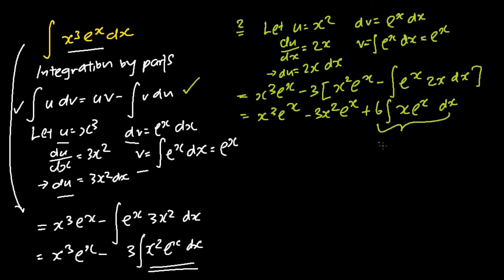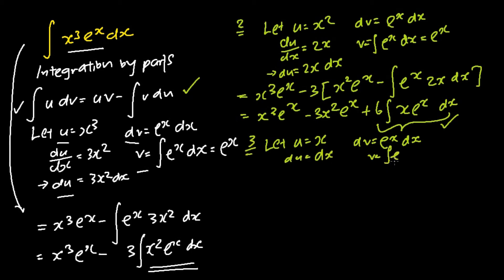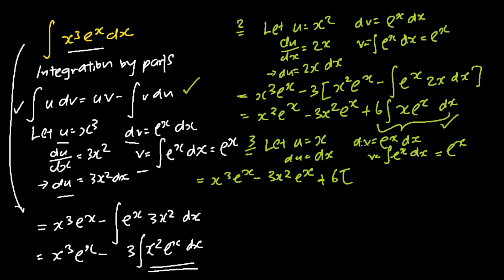I then proceed to do the integration by parts technique for the third time, focusing on the integral of x e to the power of x. I let u be equals to x, and my dv is e to the power of x dx. So my du is equals to dx. My v is the integral of e to the power of x dx, which gives me just e to the power of x. I then apply the integration by parts technique: my u is x, my v is e to the power of x, subtracting away the integral of v du, which is just dx. And I will simplify the equation to get the following.